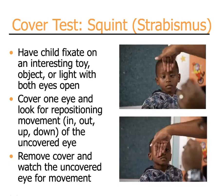The cover test is another test for squint or strabismus. When performing the cover test, you will have the child fixate on an interesting toy, object, or light in front of you with both eyes open. While they fixate on the near or distant object, cover one eye and watch the other eye for refixation or repositioning movements. This may be in, out, up, or down and occurs in the uncovered eye.